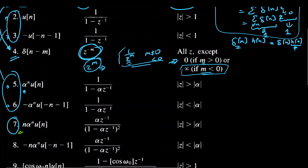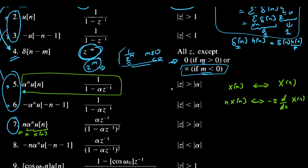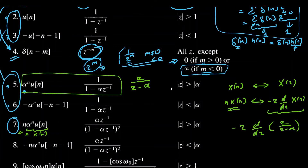For the proof of the seventh pair, say we have x(n) with Z transform X(Z). From the differentiation property in the Z domain, if we compute minus Z times d/dZ of X(Z), the inverse Z transform pair gives us n times x(n). We already know that alpha^n u(n) has the transform 1/(1 minus a·Z^(-1)), or equivalently Z/(Z minus alpha). So n·alpha^n·u(n) has the Z transform: minus Z times d/dZ of [Z/(Z minus alpha)].